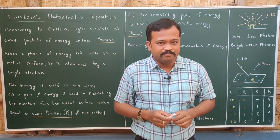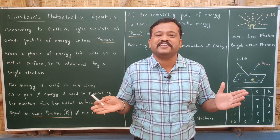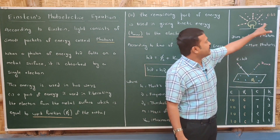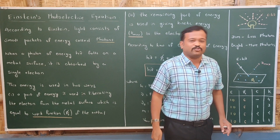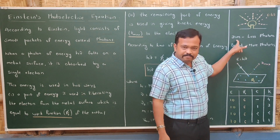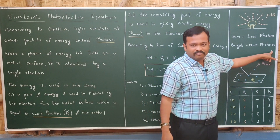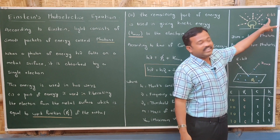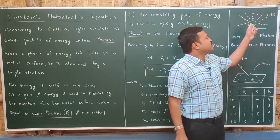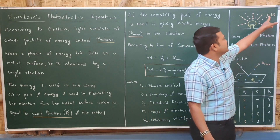He used Planck's quantum theory to explain this. According to Einstein, light consists of small packets of energy called photons. If there is a bulb, it emits light, and this light consists of packets of energy called photons. If the light is dimmer, it emits fewer photons; if the light is bright, it emits more photons. The energy of each photon is E = hν, meaning the energy of the photon depends upon the frequency — that is, the color — of the light emitted.